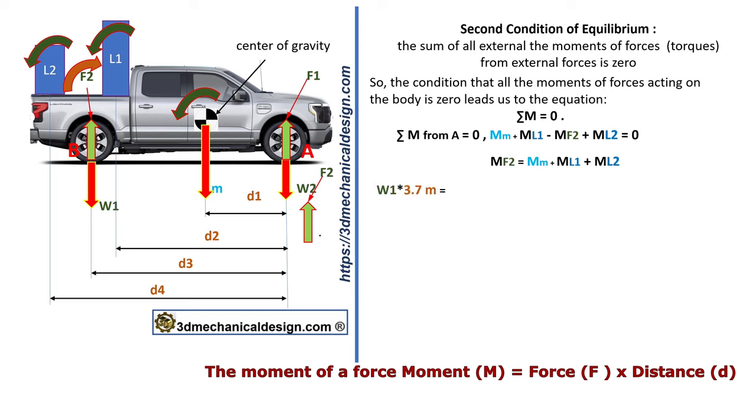W1 times 3.7 meters equals 29,000 newtons times 1.2 meters plus 9,000 newtons times 3.2 meters plus 1,000 newtons times 4.2 meters. W1 equals 34,800 plus 28,800 plus 4,200 divided by 3.7. W1 equals F1 equals 18,324.32 newtons.